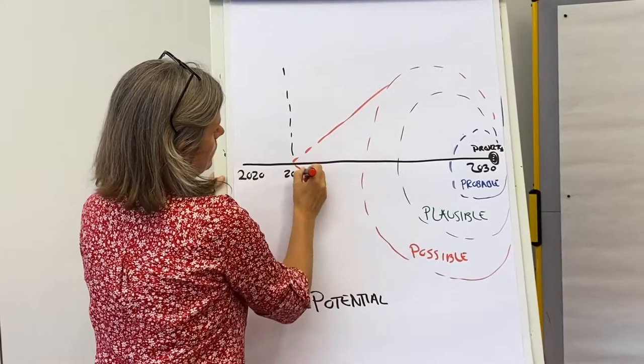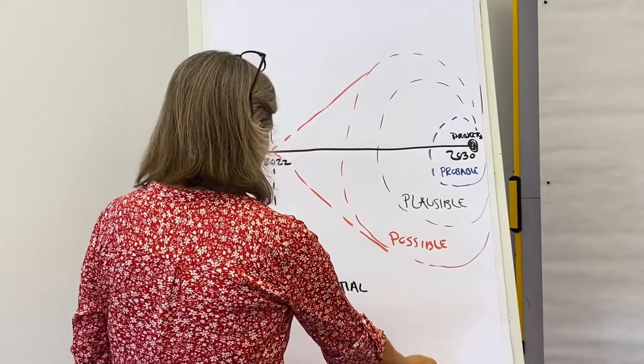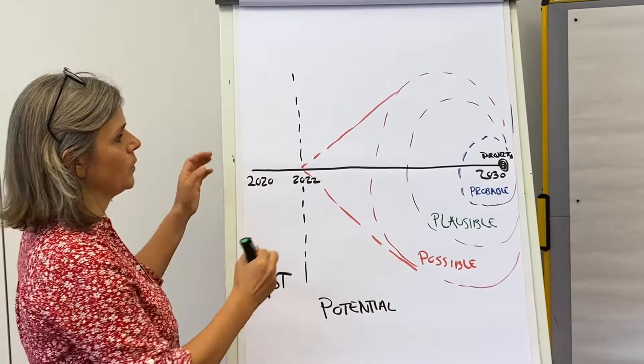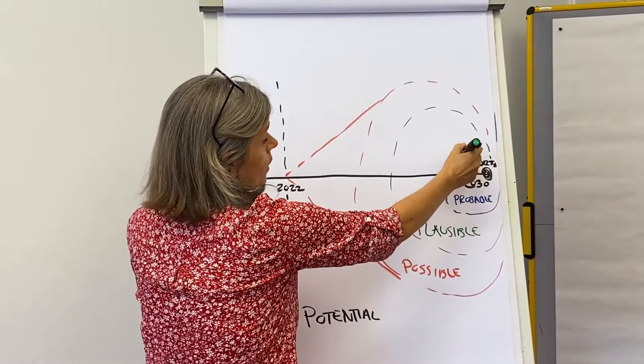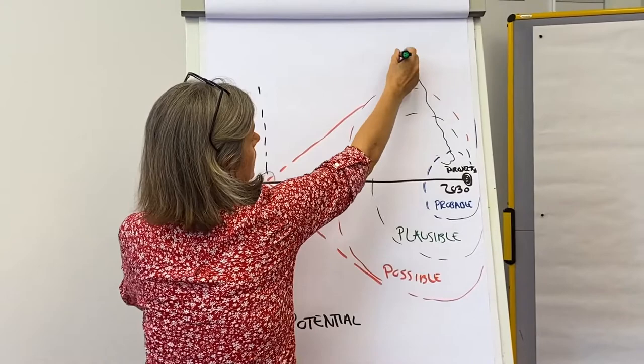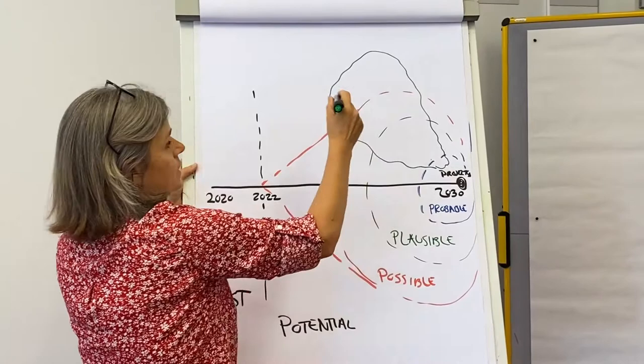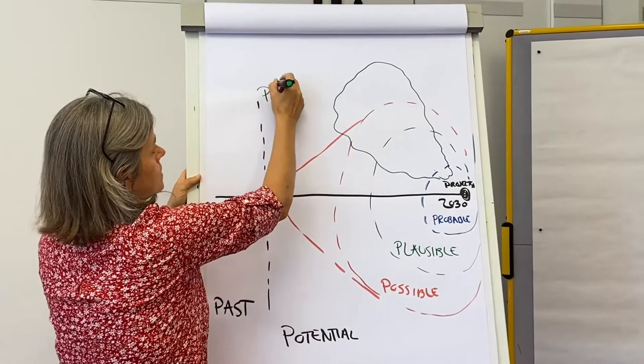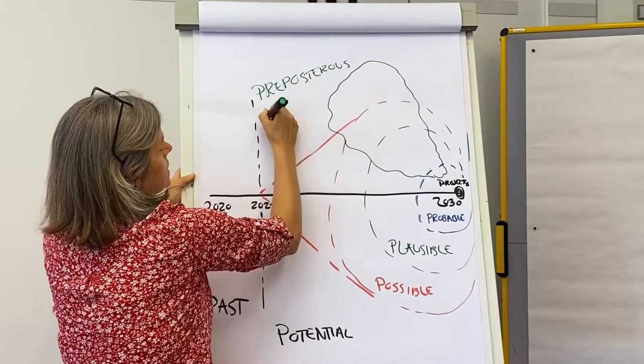And so this is the space of the future cone. There's another space, which is the space of the desirable. And when we work with scenarios, this is important to be aware of as well. And the space of the desirable is essentially cross-cutting here. So there's a part of the probable future that's desirable. There's a part of the plausible future. There's a part of the possible future that's desirable. And there's a part of the desirable future that's actually impossible. It can never happen. It's preposterous. And it's in the space of fantasy.